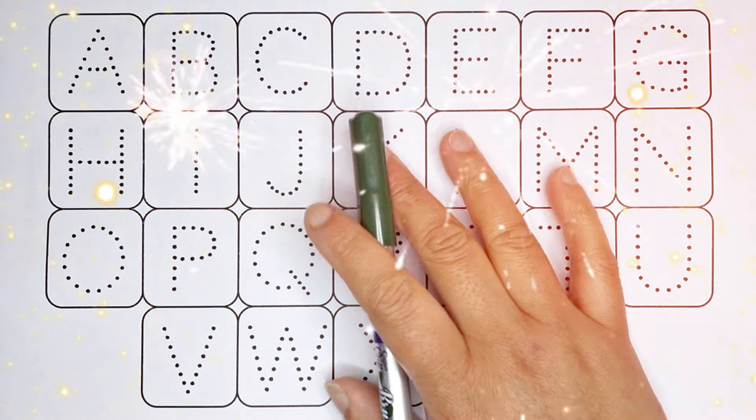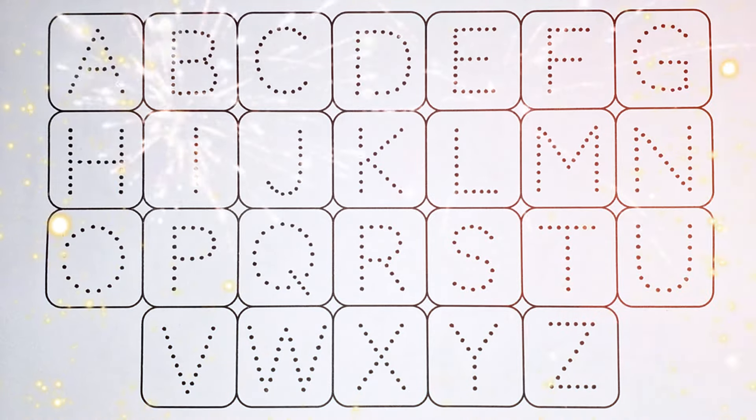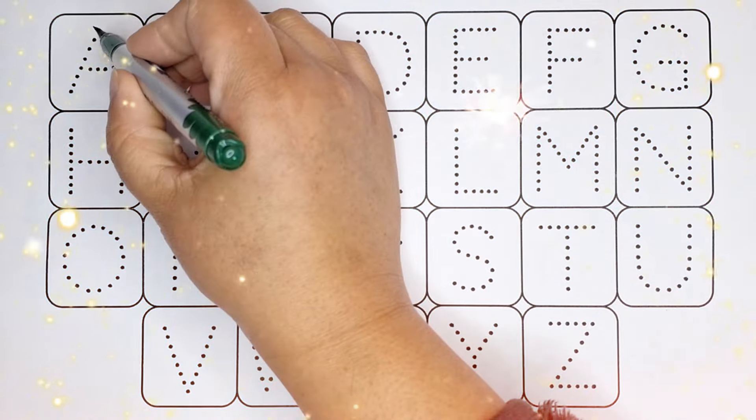Hello kids, welcome back. Let's learn alphabet letters A to Z. Dark green color A.